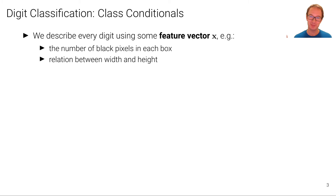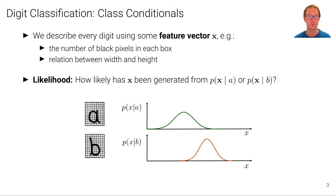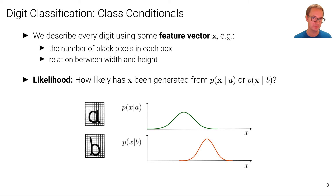We now describe every digit using some feature vector X. For example, this feature vector could describe the number of black pixels in each image, or the relation between the width and the height — the aspect ratio — some very simple features. It could also be something more complex, like features derived from some neural representation. But let's consider a one-dimensional feature space for now, just because it's much easier to visualize.